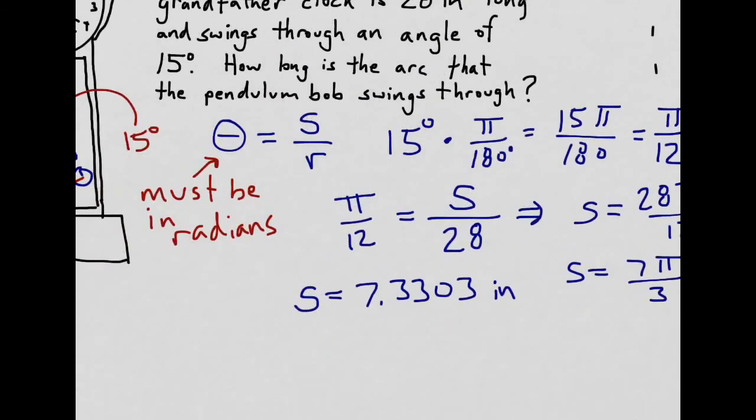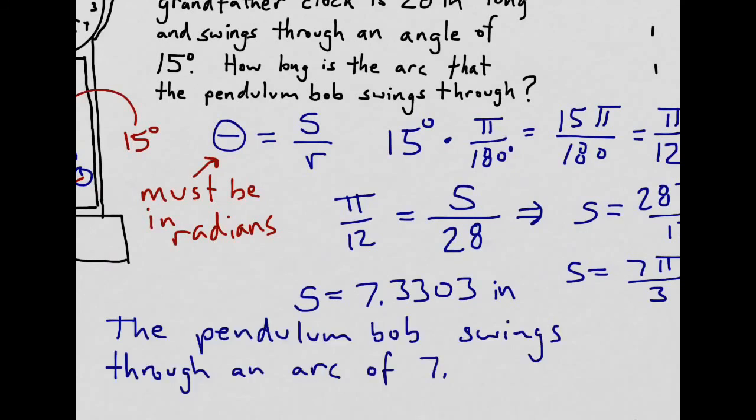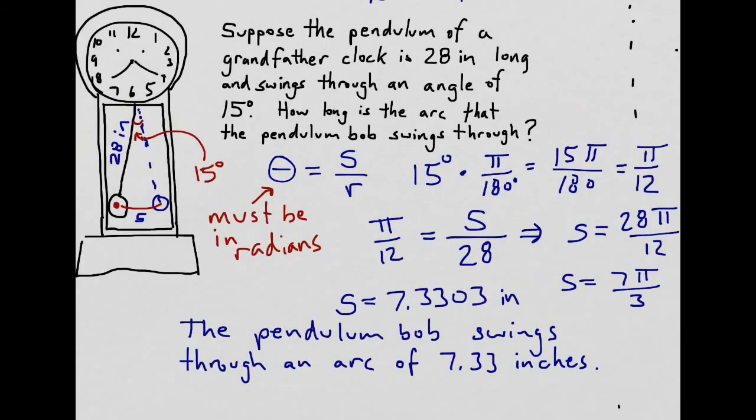So writing our solution out in words, we could say that the pendulum bob swings through an arc of 7.33 inches. We'll take a look at angular speed in a separate video. I hope you enjoyed this one. Thanks for watching.